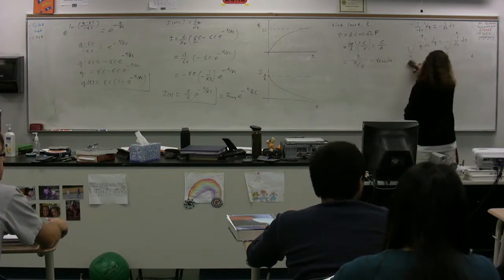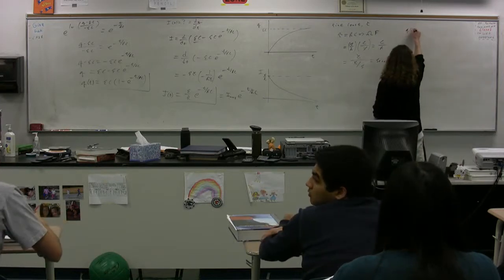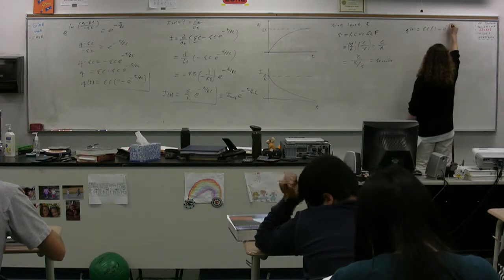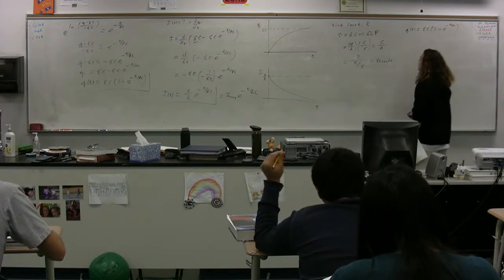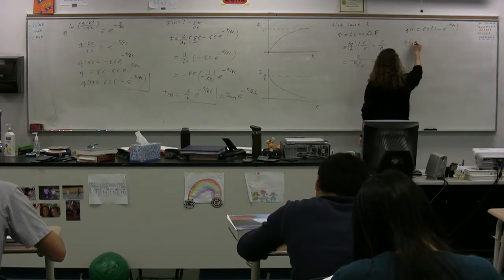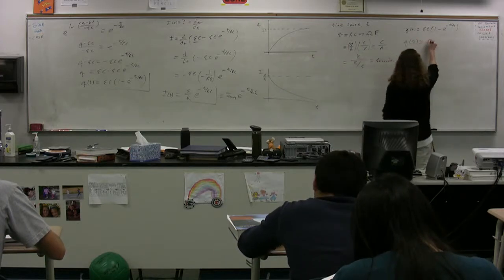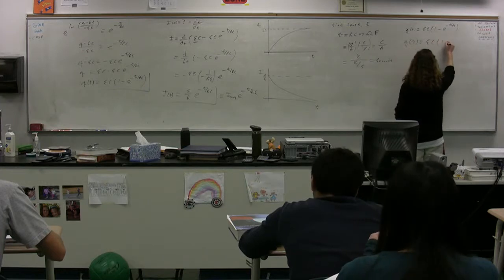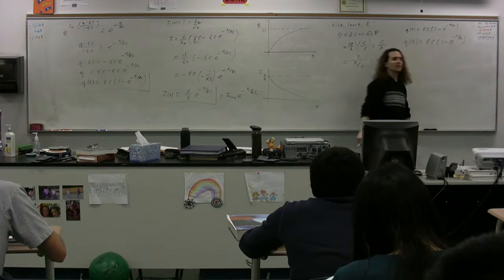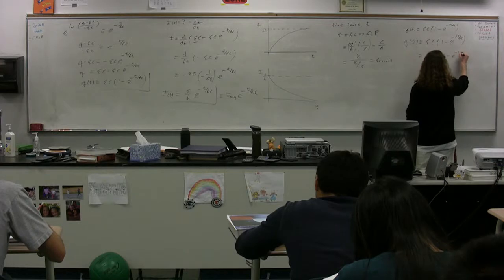So, if we look at our equation, for example, for charge. Charge as a function of time in this particular case was equal to the emf times the capacitance times 1 minus e to the negative t over RC. So, what is the charge at the time when the time is equal to the time constant? So, we get the emf times the capacitance times 1 minus e to the negative RC over RC. In other words, 1 minus e to the negative 1.